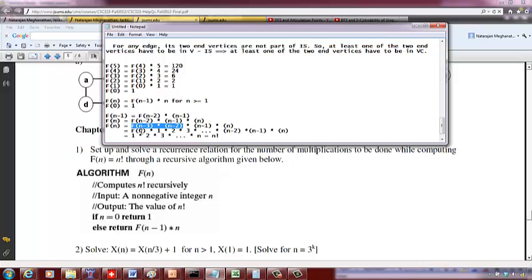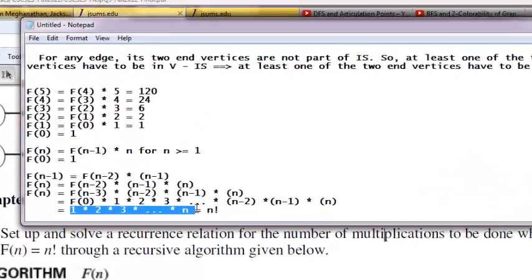But I know f(0) is 1. So it is 1 times 1 times 2 times 3 and so on up to n. So this is nothing but your n factorial.